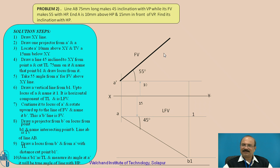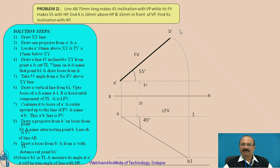Draw the line in the upward direction at 55 degrees. Then keep the compass here, take it to this position, and draw the arc toward this direction along the 55 degree angle line. It will cut at a particular point. So now A-dash and B-dash give the front view length. Then draw the locus of point B. The procedure is exactly similar to the previous problem.